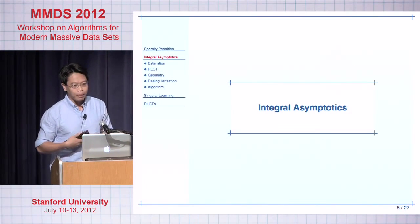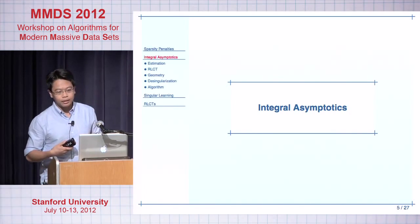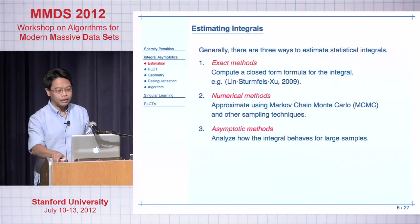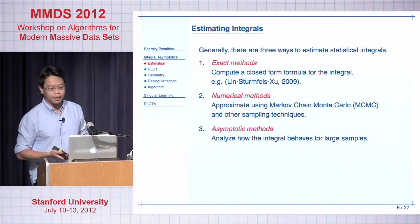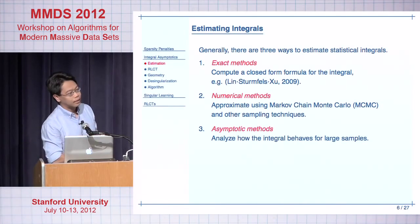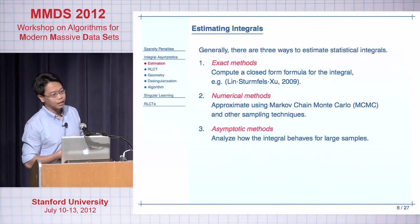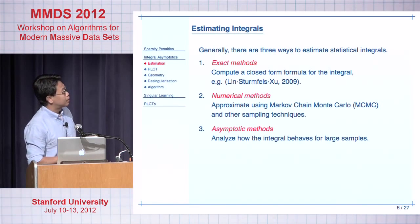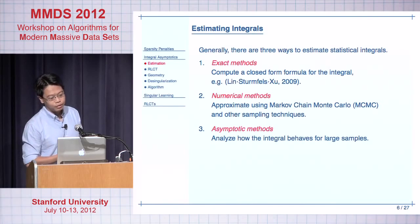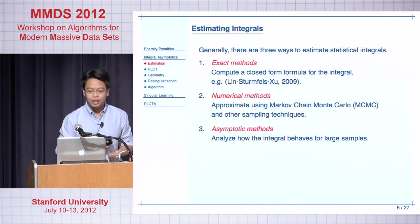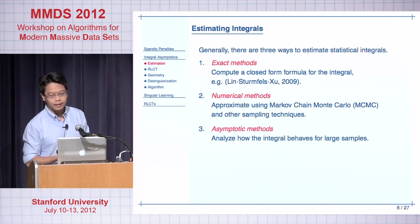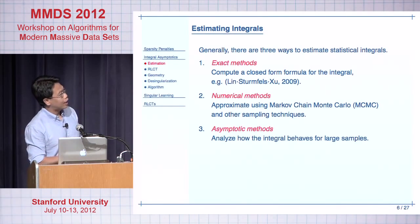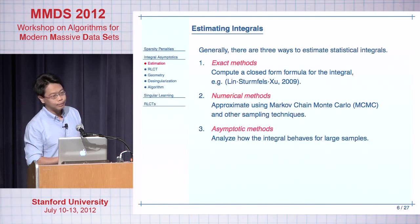Let's look at some very classical asymptotics of integrals from mathematics. In general, there are three ways to estimate integrals in statistics. The first way is to find a closed-form formula for your integral — of course, this is not often possible. The second most popular way is to use numerical methods, such as Markov chain Monte Carlo, Gibbs sampling, or other sampling techniques to approximate the integral. The third method, which I'll be looking at today, is asymptotic methods: we analyze how the integral behaves when the sample size grows very large.